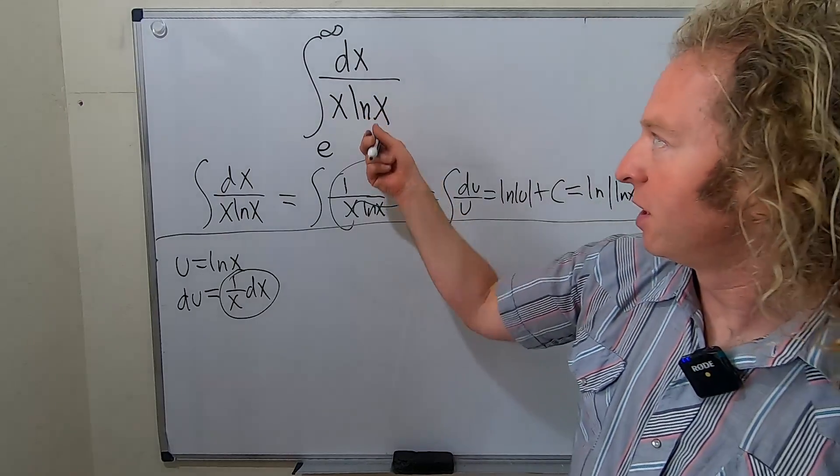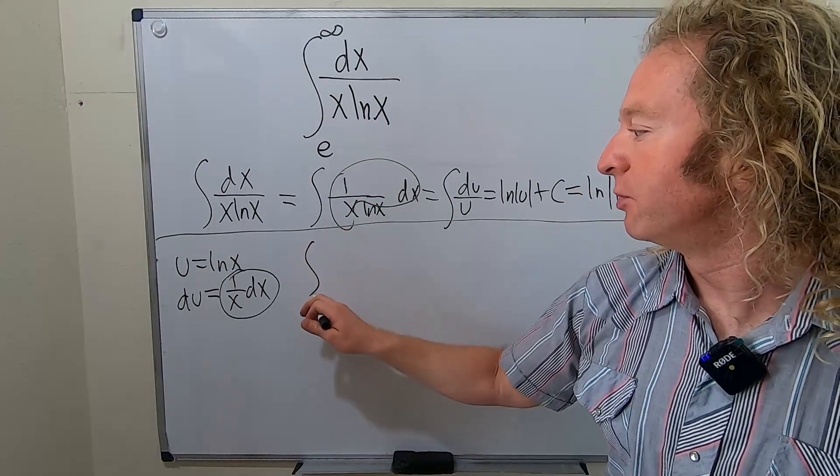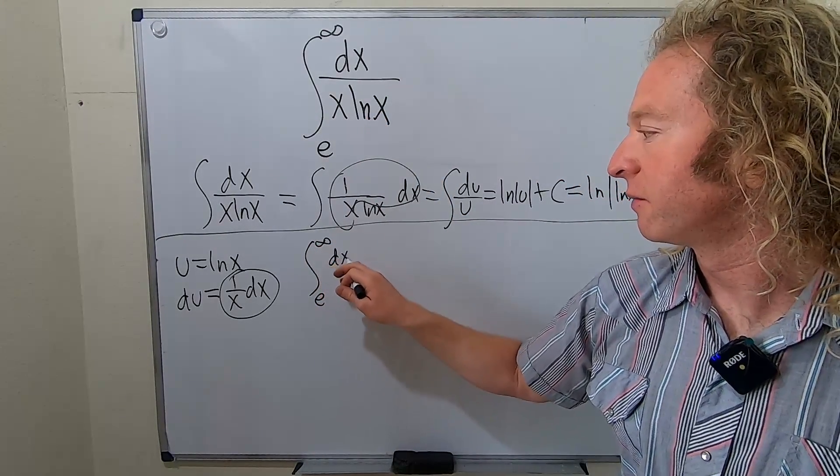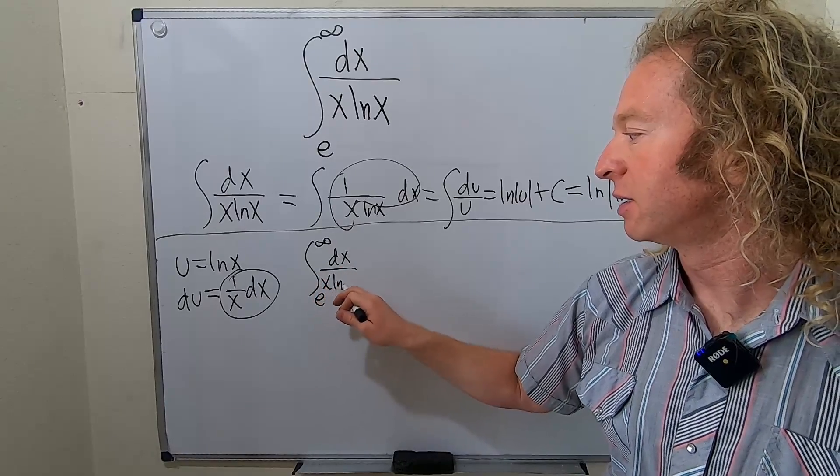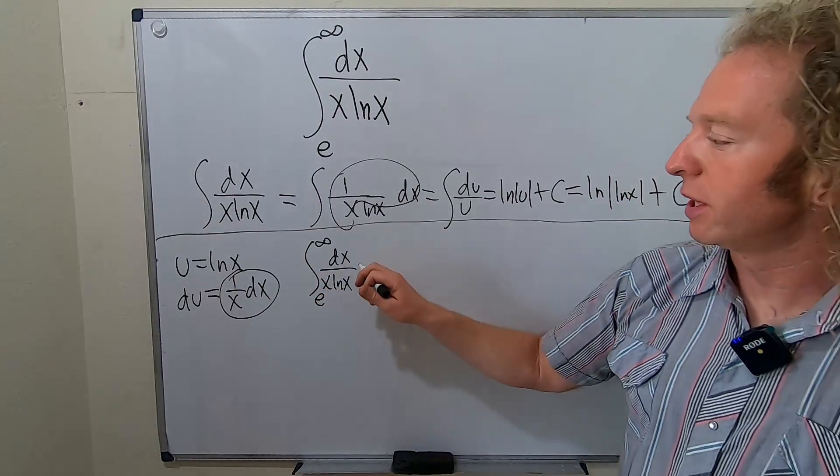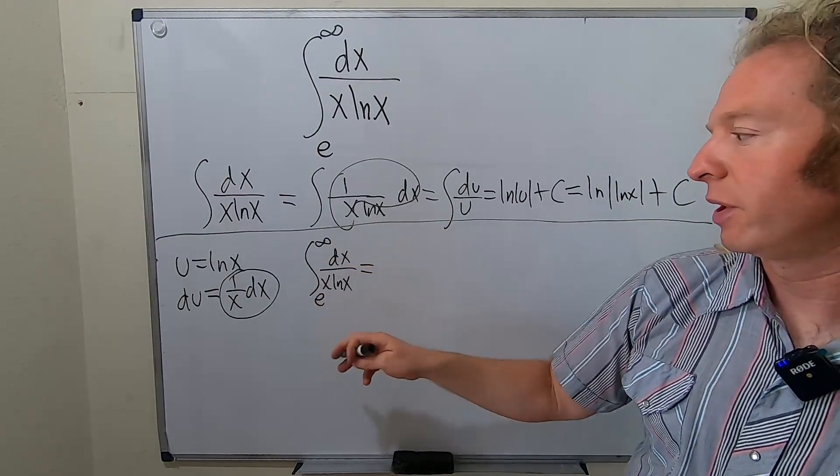Alright, now let's deal with this bad boy. So e to infinity of dx over x ln x. So what we can do now is use the definition.